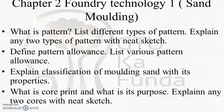For chapter two, Foundry Technology 1, the focus is on sand molding — topics include pattern, pattern allowance, classification of moldings and their properties. You also need to explain the two cores with neat sketches, or they may ask about a particular type of core from this chapter. So go through the whole part on cores.